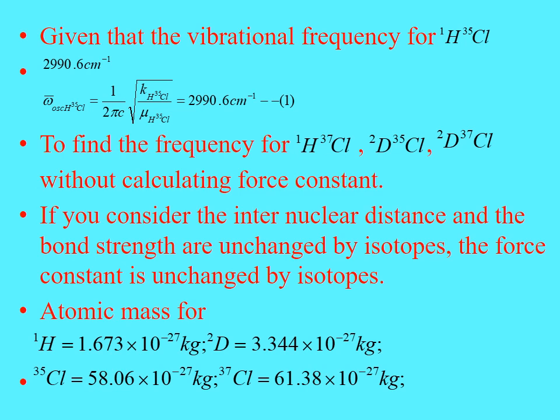If we consider that the internuclear distance and bond strength are unchanged by isotopic substitution, then the force constant is unchanged by isotopes — it remains the same across all isotopes. The atomic masses are: hydrogen: 1.673×10⁻²⁷ kg, deuterium: 3.344×10⁻²⁷ kg, chlorine-35: 58.06×10⁻²⁷ kg, chlorine-37: 61.38×10⁻²⁷ kg.